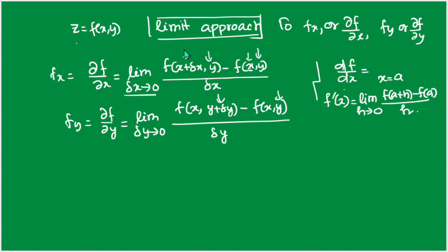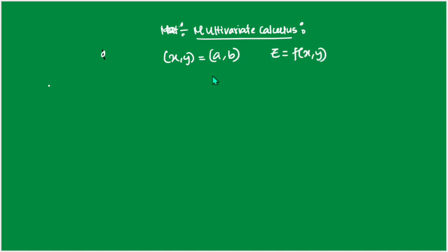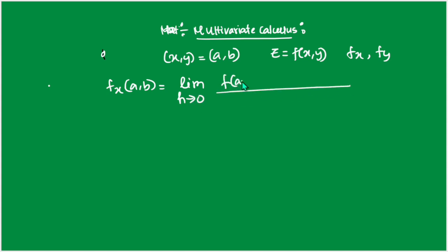Now, at a particular point, we can define partial derivatives as follows. Suppose we have a function z = f(x,y) and a point (a, b). The partial derivative fx(a, b) is defined as: limit as h→0 of [f(a+h, b) − f(a, b)] / h, where the x component changes to a+h while y stays at b.